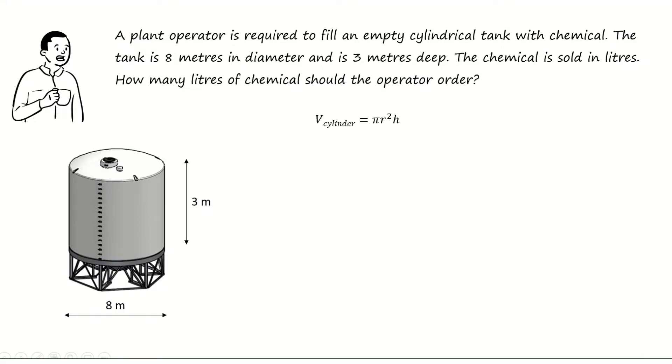The volume of a cylinder is pi r squared times h, where r is the diameter divided by 2. In our case, the diameter is 8 meters. The radius is 8 meters divided by 2, which is 4 meters.